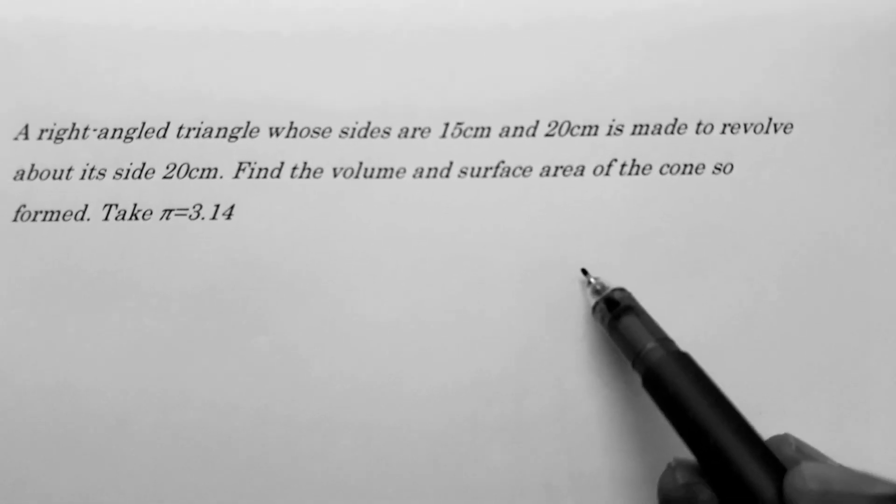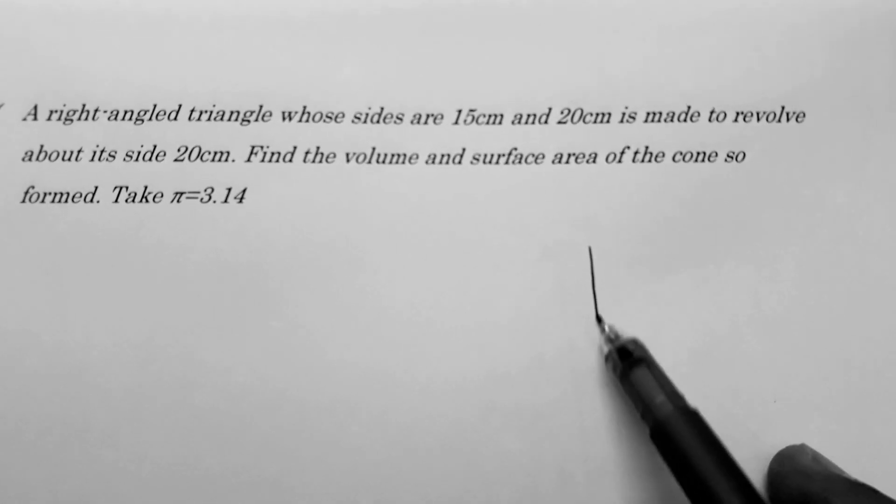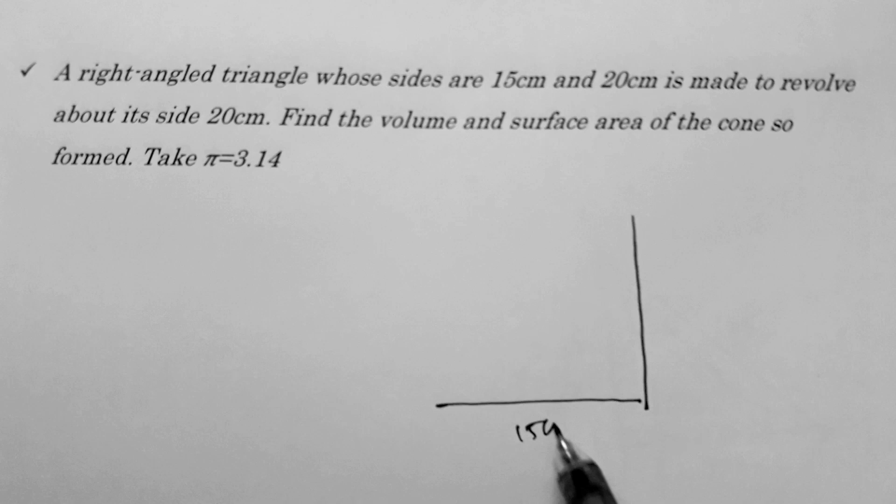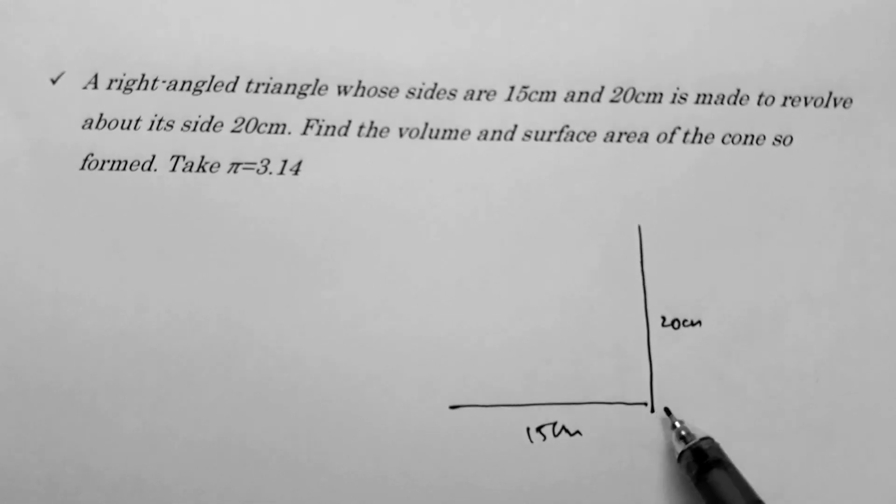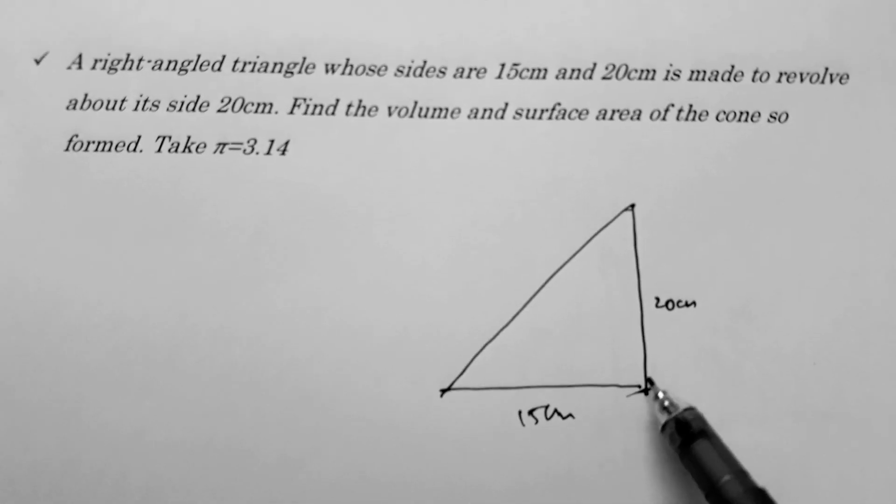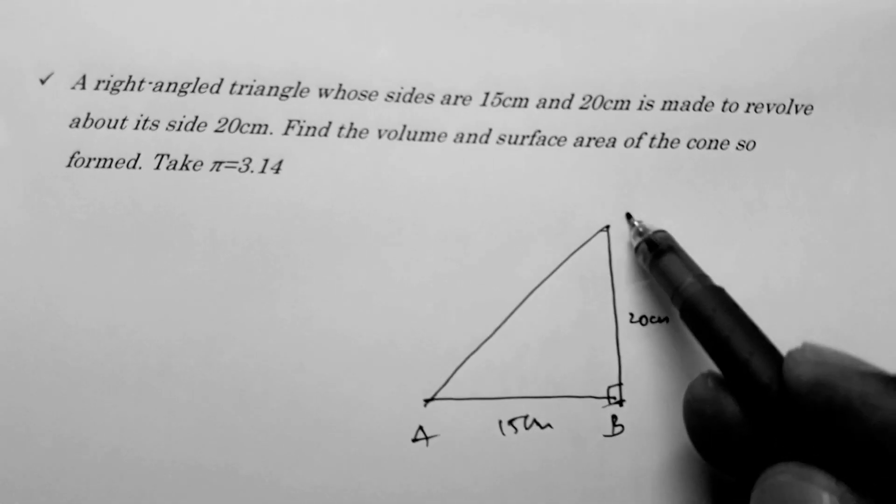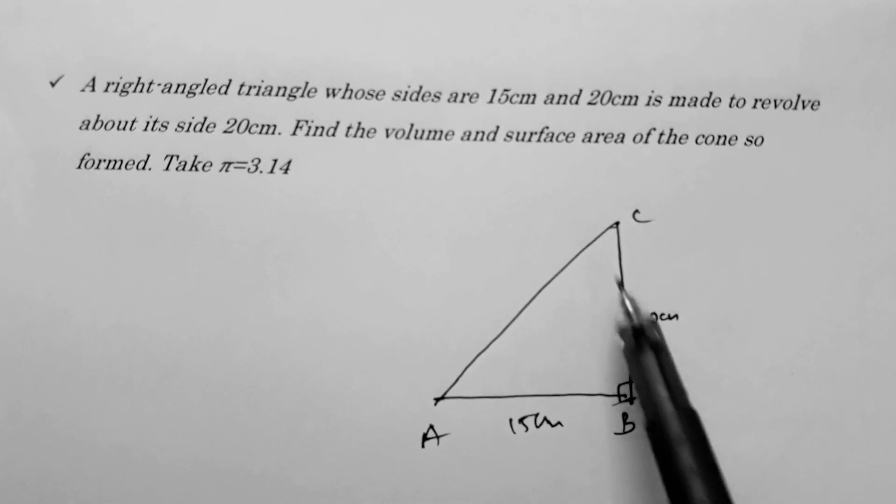Here's a right-angled triangle with sides 15 centimeters and 20 centimeters. Triangle ABC has these dimensions.